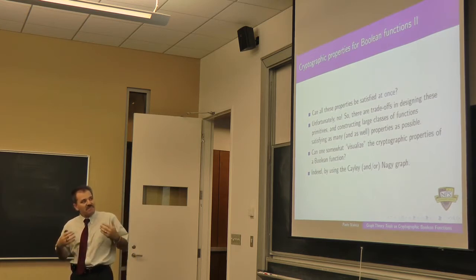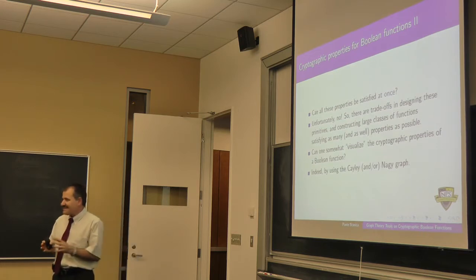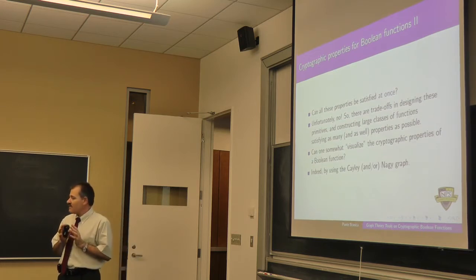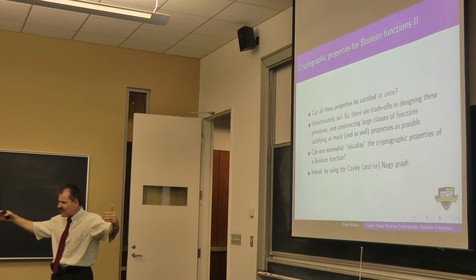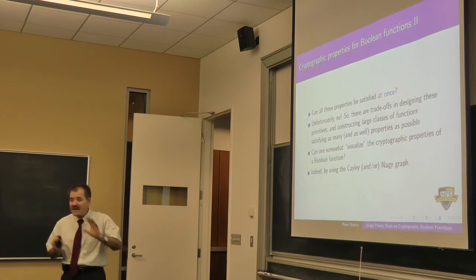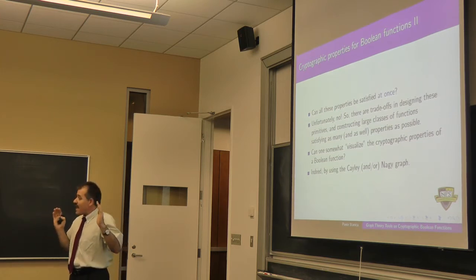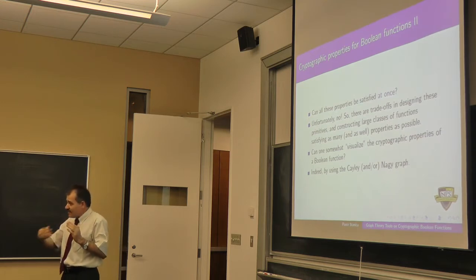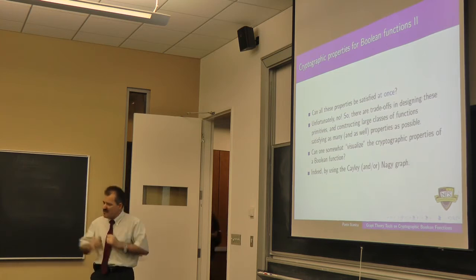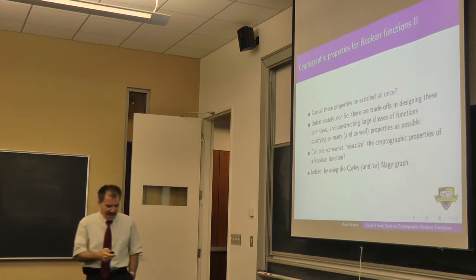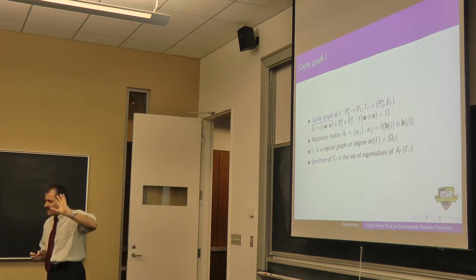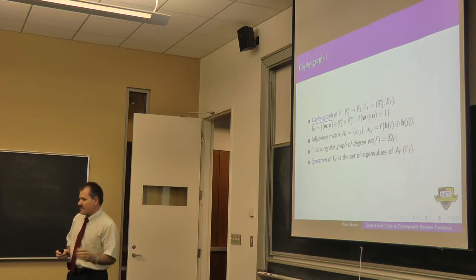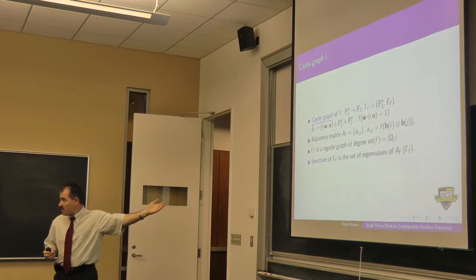Homogeneity allows me to reuse previous computations by rewriting the functions differently. Now let's take the show on the road: the Cayley graph. I'm not going to define it in the general graph theory context; rather, I'll say exactly what it is for Boolean functions. I have to give you the vertices and the edges. The vertices of the Cayley graph associated to a fixed Boolean function are all the elements of the vector space F_2^n.